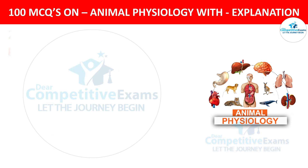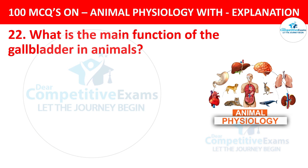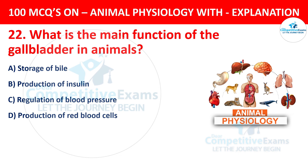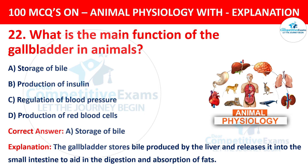Question number 22. What is the main function of the gallbladder in animals? The options are storage of bile, production of insulin, regulation of blood pressure, or production of red blood cells. The correct answer is A, storage of bile. The gallbladder stores bile produced by the liver and releases it into the small intestine to aid in the digestion and absorption of fats.